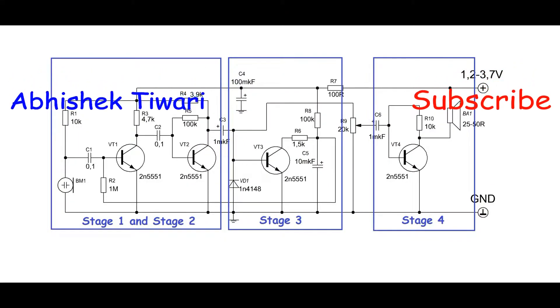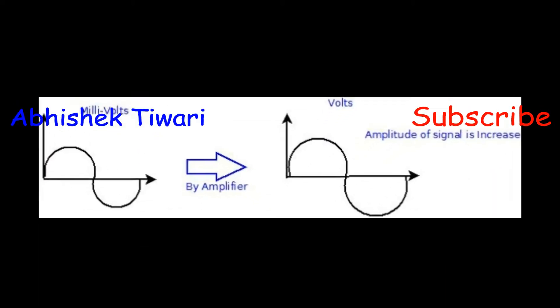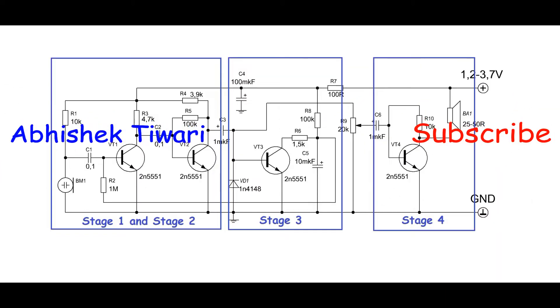In the first and second stages, the amplifier increases the signal coming from the microphone.